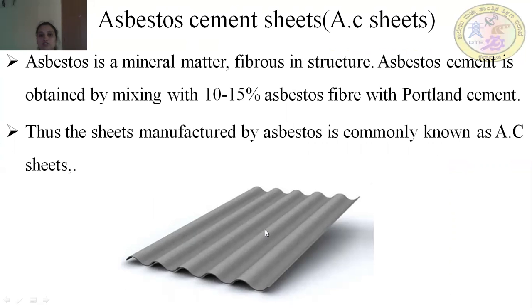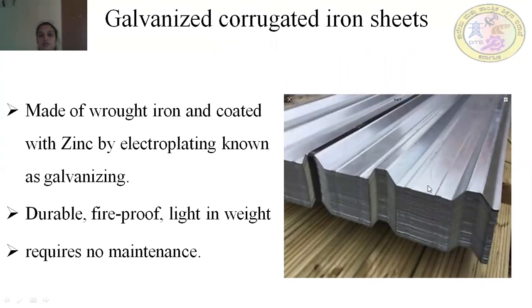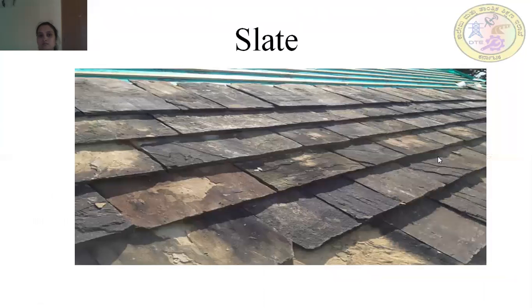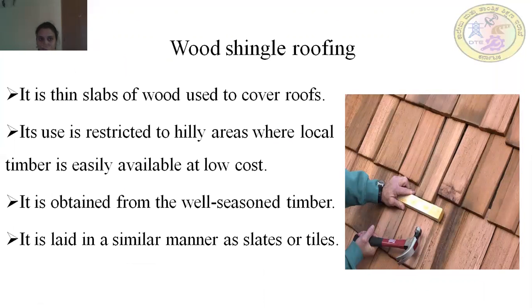GI corrugated sheets are made from raw iron coated with zinc by electroplating (galvanizing), are durable, and require no maintenance. Slates are used where heavy rainfall and snowfall occur, obtained from sedimentary rocks of limestone or sandstone, and should be hard, tough, durable, and of rough texture. Wood shingles are thin slabs of wood, with use restricted to hilly areas where local timber is available.